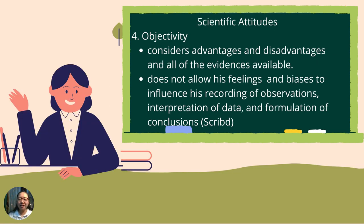Another scientific attitude is objectivity. It considers advantages and disadvantages and all of the evidences available, and does not allow feelings and biases to influence recording of observations, interpretation of data, and formulation of conclusions. For instance, before deciding on your class poll on what platform of engagement you want — synchronous or asynchronous — you tabulated the pros and cons of both. You found out that asynchronous has more advantages, so you voted for asynchronous engagement. That is objectivity.